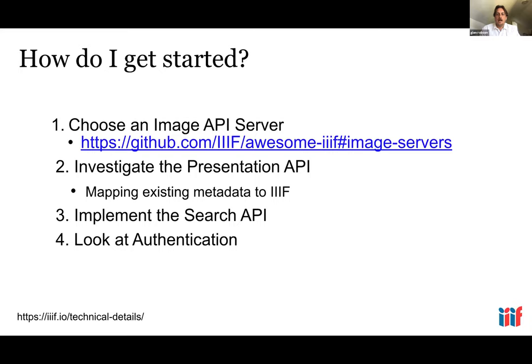At a practical level, how do you start with IIIF? The advice is to start with the image API — there are many open source image API solutions available. You choose your image API, set it up, put your images into it, and then investigate the presentation API, which is mainly about mapping your existing metadata to IIIF. This tends to be a custom institution-by-institution mapping since everyone's metadata is different. You generate presentation manifests, make them available along with your image API, and start using IIIF viewers.